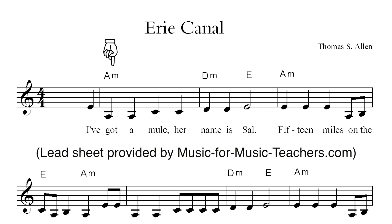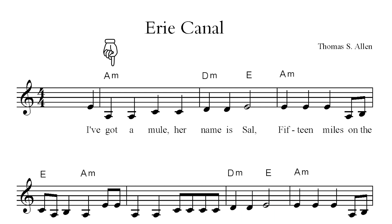The first chord is A minor, which establishes the fact that we are in the key of A minor. Now, are we using the chords based on the A harmonic minor, the A natural minor, or the A melodic minor? The next chord is D minor — that would be the subdominant. Because it's minor, it looks like we are using the harmonic minor scale.